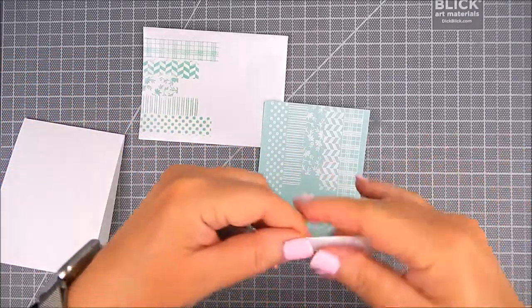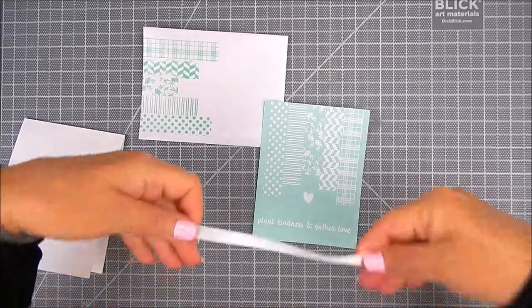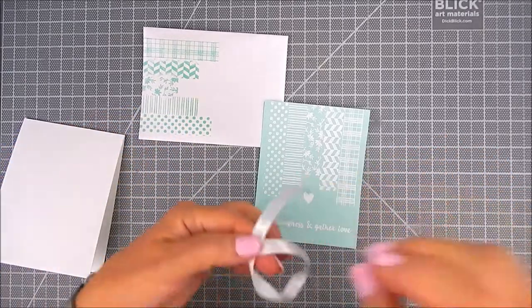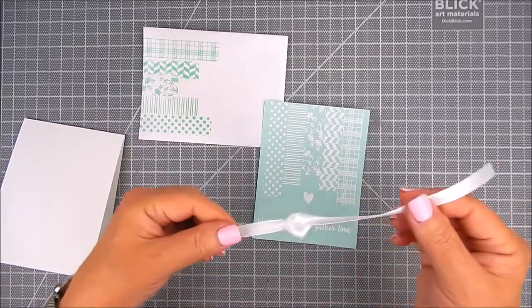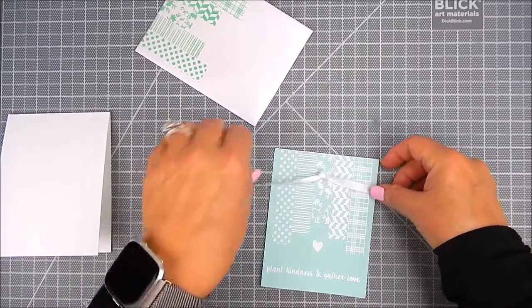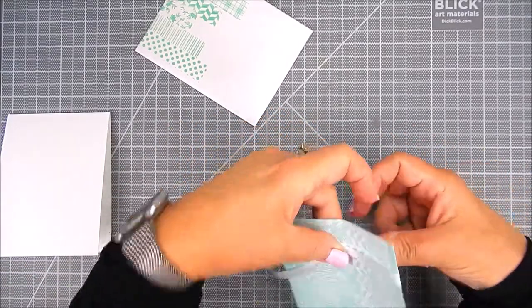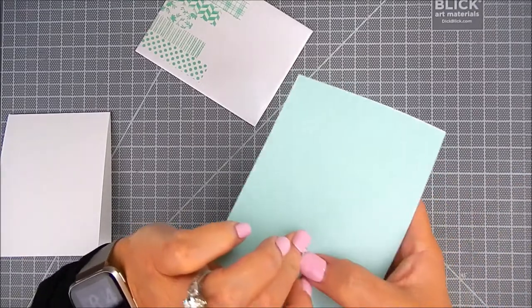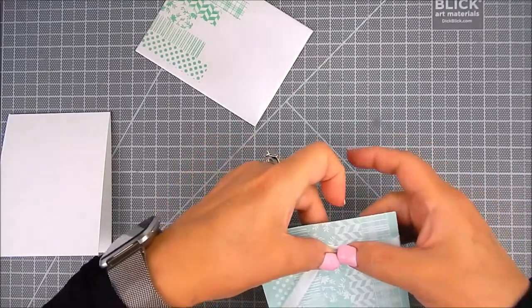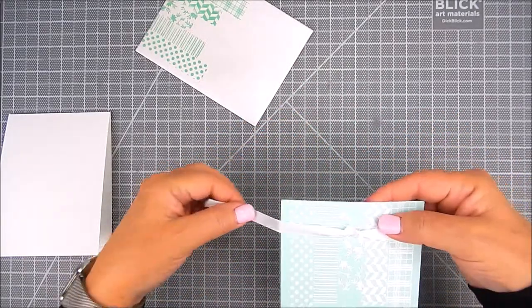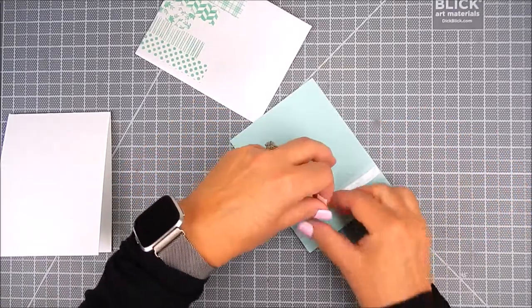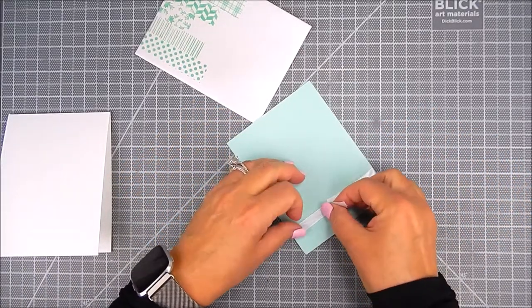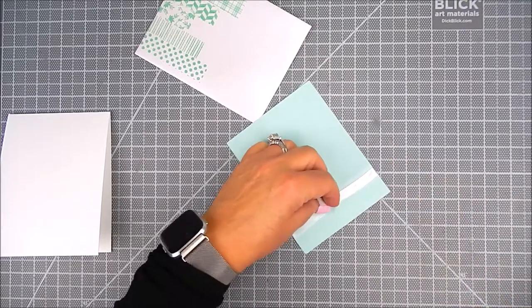Now I'm adding a ribbon with a knot in the middle of it and I'm going to adhere that to the stamped background panel. I just added flat double-sided tape to the back and adhered the ribbon down and trimmed away any excess.